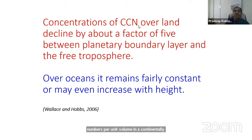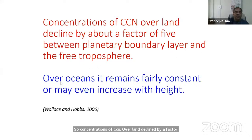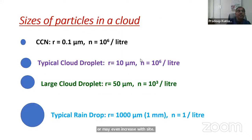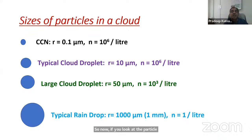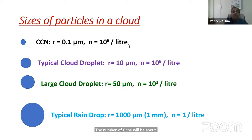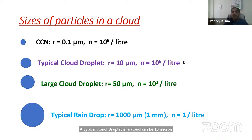For the same supersaturation, the number of CCNs per unit volume in maritime air is small compared to large numbers in continental air. CCN concentrations over land decline by a factor of about 5 between the planetary boundary layer and the free troposphere, whereas over the ocean they may remain fairly constant or even increase with height. Looking at particle sizes inside a cloud: CCNs are typically 0.1 micron with a number concentration of about 10⁶ per liter. A typical cloud droplet is about 10 microns, also with a concentration of about 10⁶ per liter.